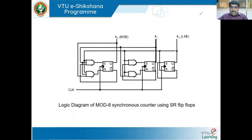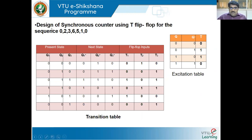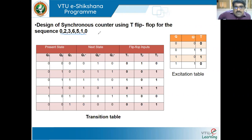We have now seen the mod 6 synchronous up counter and the mod 8 synchronous up counter. Next, sometimes the counting sequence need not be in order — it can be any specific order. Here is an example of designing a synchronous counter using T flip-flops for the sequence 0, 2, 3, 6, 5, 1, 0. We call this an arbitrary counter — it has no increasing or decreasing order.